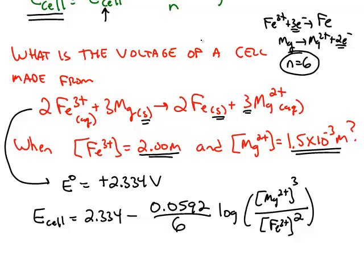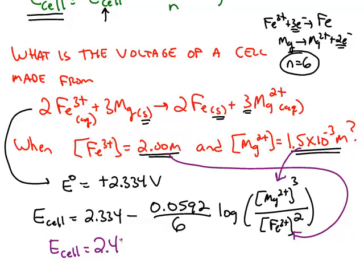So if you substitute in the concentrations, 1.5 times 10 to the negative 3 molar in the numerator, 2 molar in the denominator, you can calculate the voltage under these conditions. It's going to be a little bit higher than the standard voltage. It works out to be 2.42 volts.